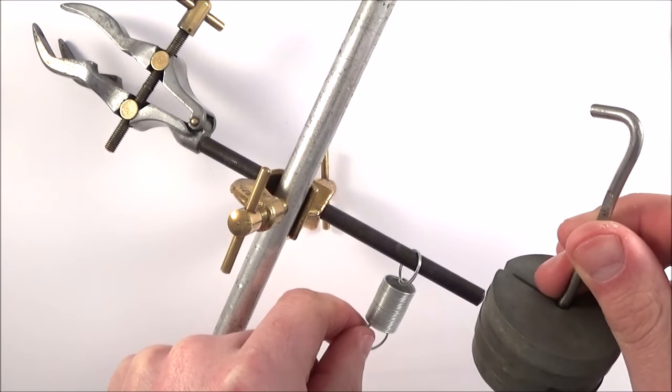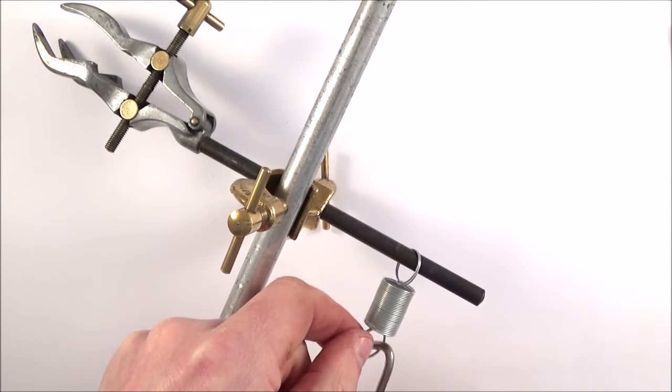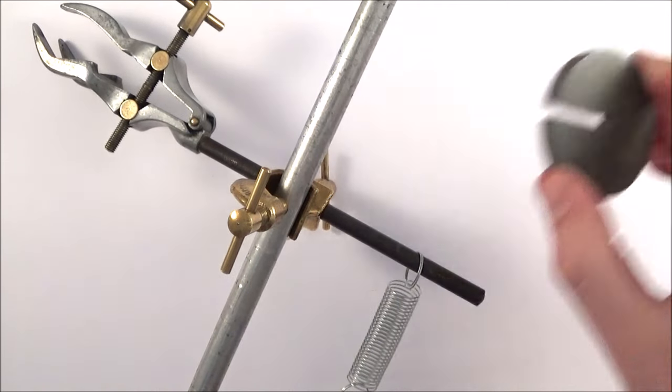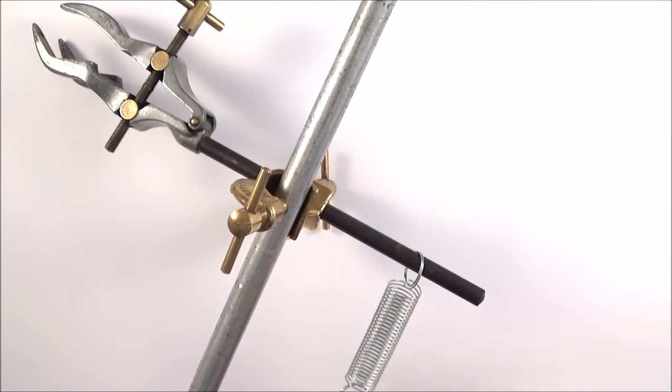As I add more masses using a mass hanger with 100-gram masses, what we find is that the spring extends. When I add more and more masses, it's fairly obvious the spring gets longer. You don't need to be doing A-level physics to work that out.